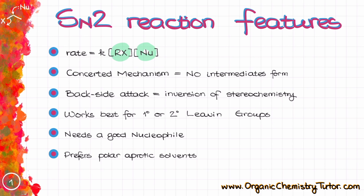The SN2 reaction is a concerted mechanism, which means that we are forming no intermediates of any sort. The reaction requires backside attack, which means that if we have any meaningful stereochemistry, we are going to cause inversion of that stereochemistry. So if your leaving group was sitting on the dash, the new nucleophile is going to end up on the wedge, and the other way around. SN2 reactions are extremely sensitive towards steric hindrance, so they work best for primary or secondary alkyl halides. We also need a good nucleophile, and finally, we prefer polar aprotic solvents.